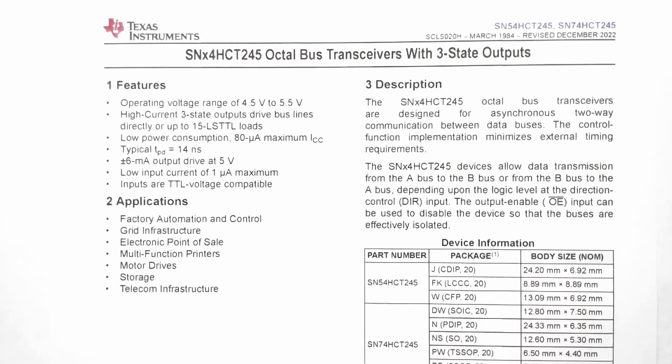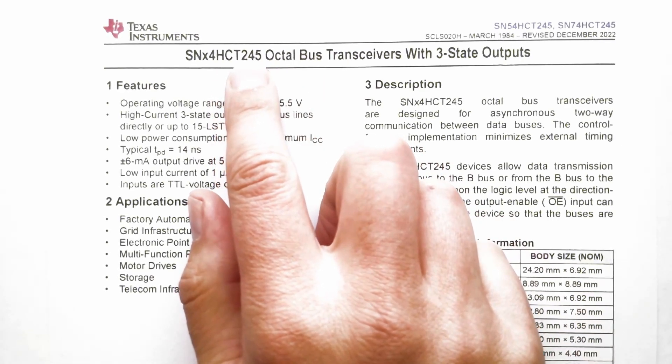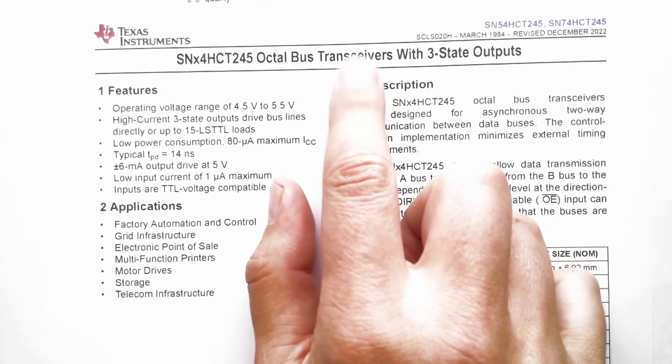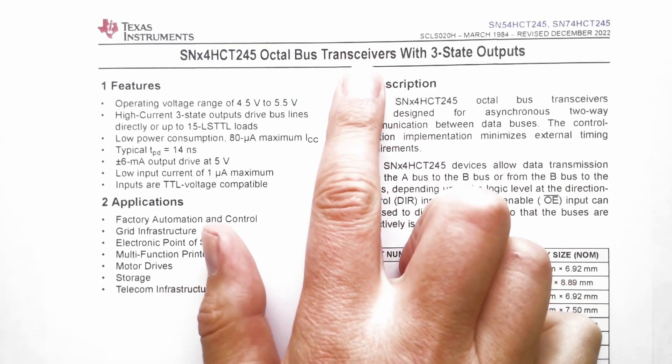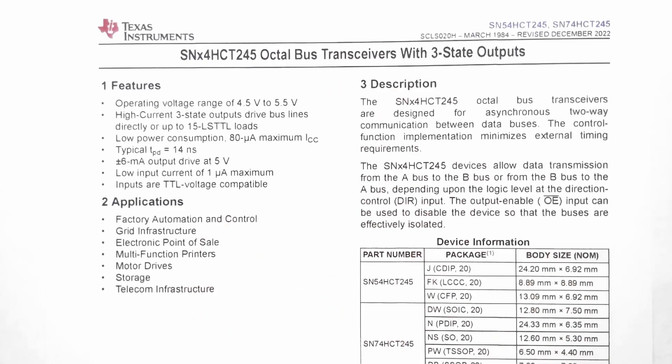I can do this with a tri-state buffer and I've got here the 74HCT245 octal bus transceiver with tri-state outputs. This is a transceiver that means it can both transmit and receive. In other words, it can send data in both directions.